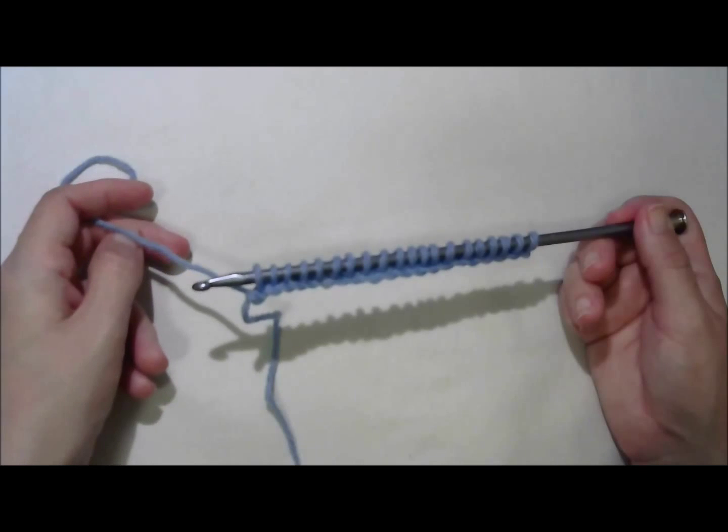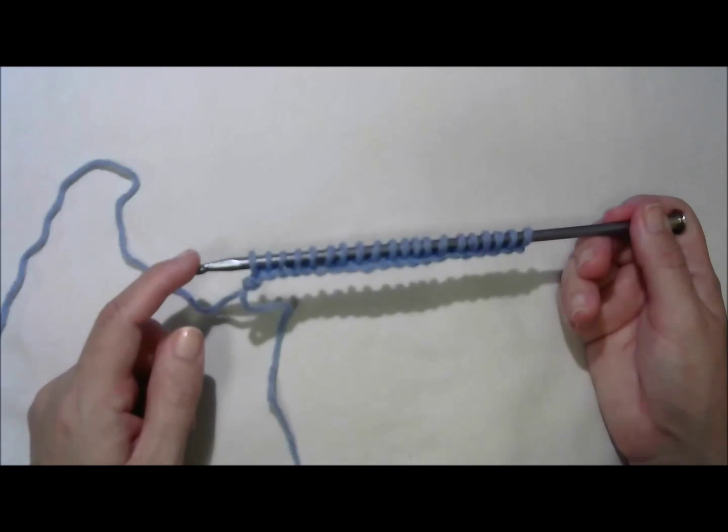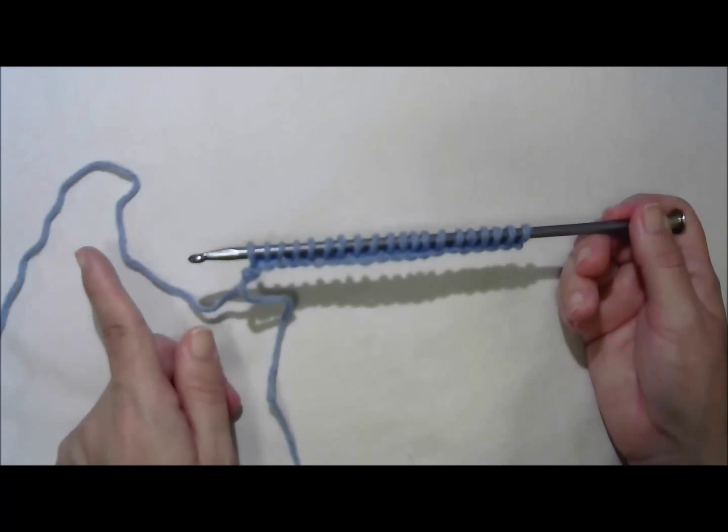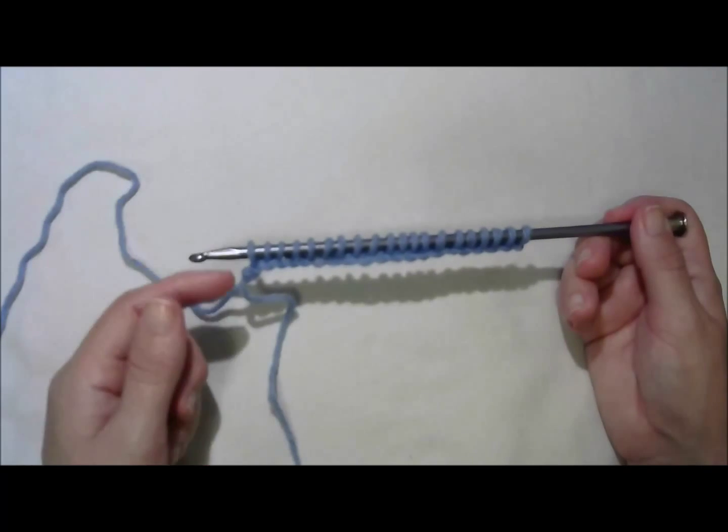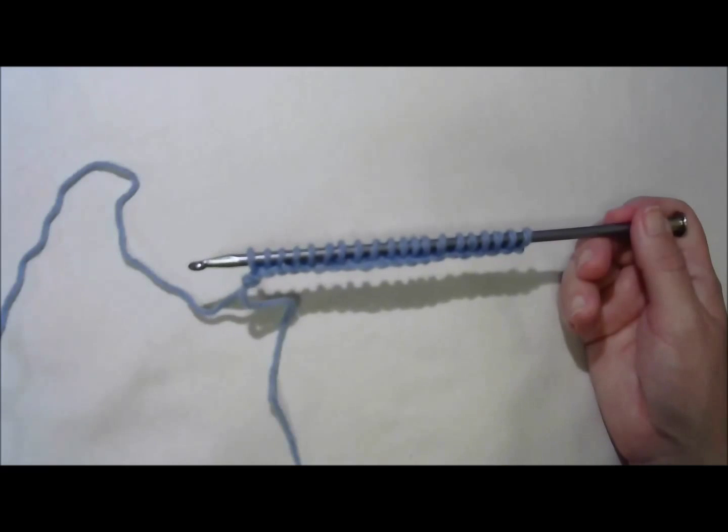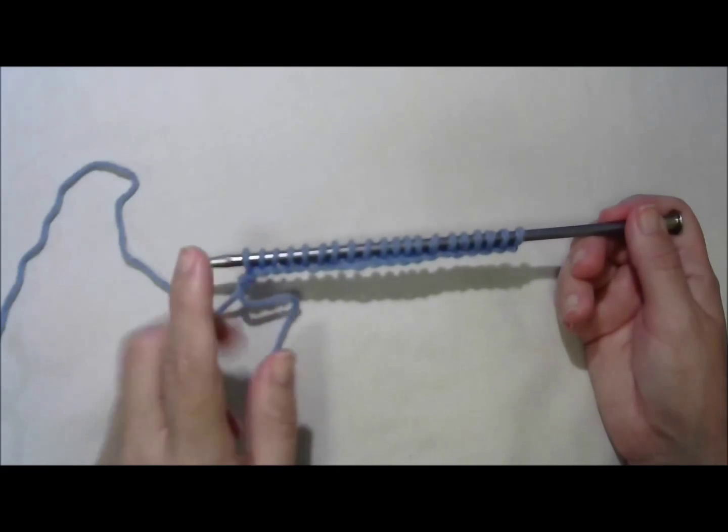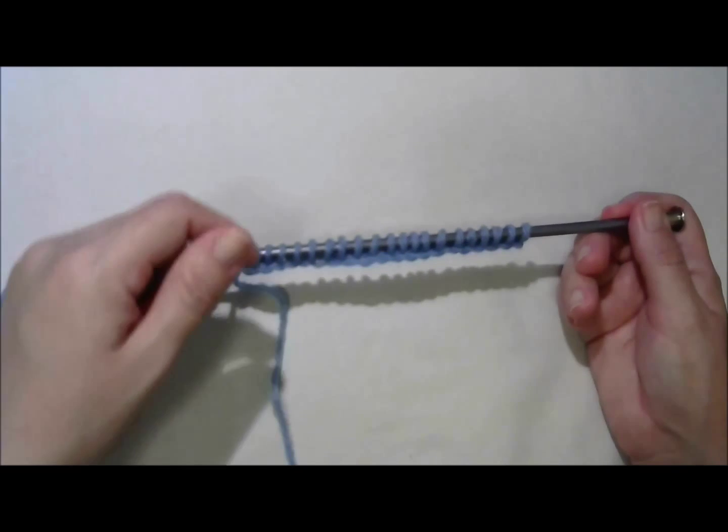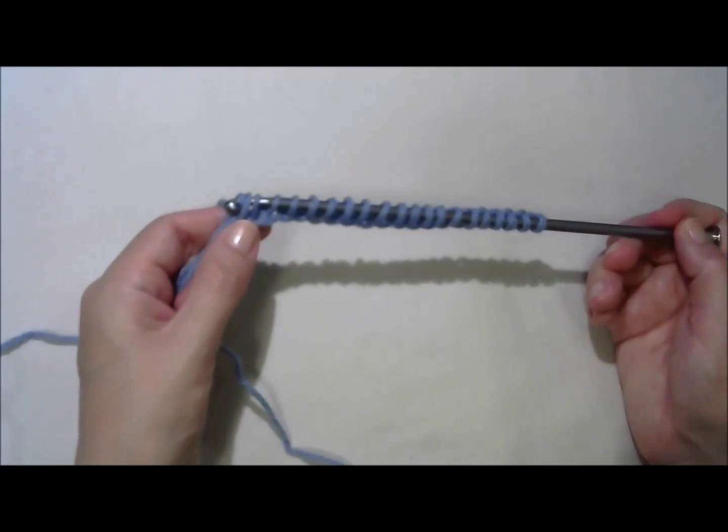To make a return pass, we'll yarn over, draw through just one, and that gives us the edge. After the edge is done, you yarn over and draw through two loops. Yarn over, draw through two loops all the way back to the beginning.